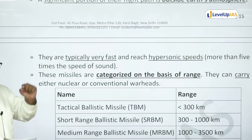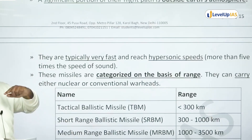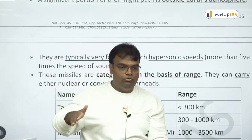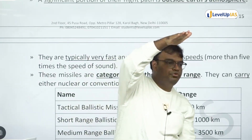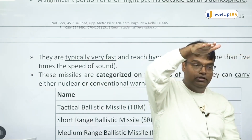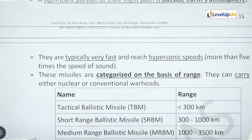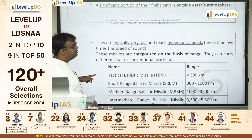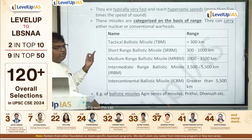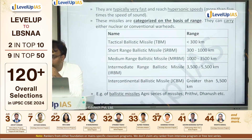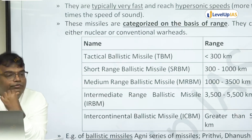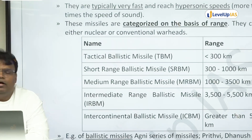Ballistic missiles are typically very fast and can reach hypersonic speeds — more than five times the speed of sound — especially when launched and when falling. In projectile motion, the slowest point is at the top. After launch, gravity reduces the speed going up, then accelerates it coming down, so it's fastest at the end. These missiles are categorized by range: tactical ballistic missiles have a range less than 300 km; short range up to 1,000 km; medium range up to 3,500 km; intermediate range up to 5,500 km; and ICBMs above 5,500 km.